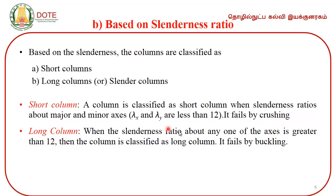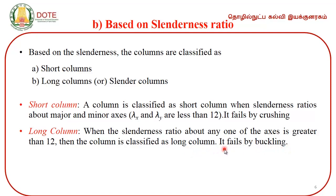When the slenderness ratio about any one of the axes is greater than 12, the column is classified as a long column. It fails by buckling.